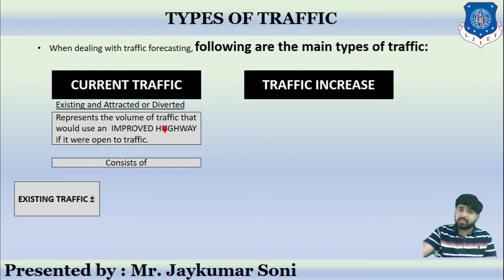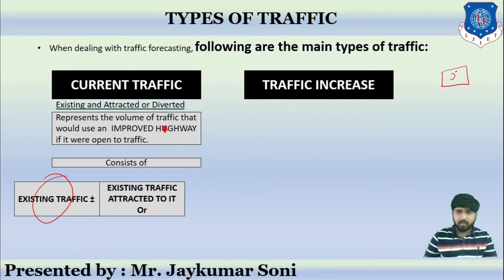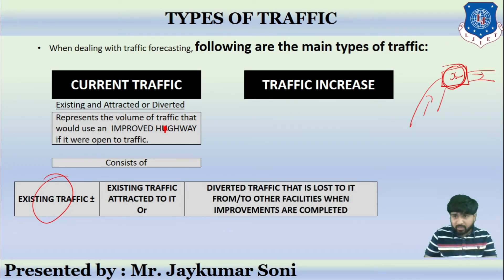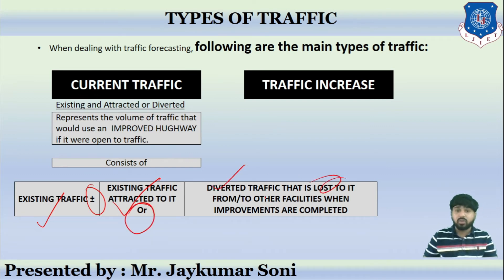Current traffic consists of existing traffic plus or minus existing traffic which is attracted or diverted. For example, consider road X with roads joining from different sides. It includes the existing traffic of that road, plus the existing traffic which is attracted to or diverted from that junction when improvements are completed. In short: existing traffic plus or minus existing attracted or diverted traffic lost from or gained by other facilities.